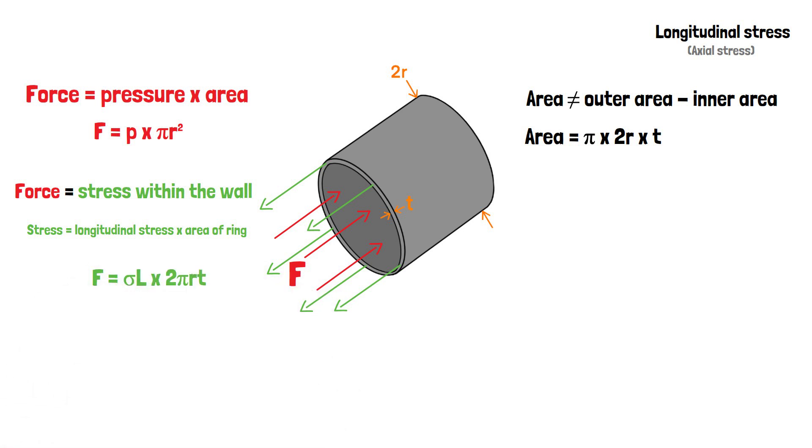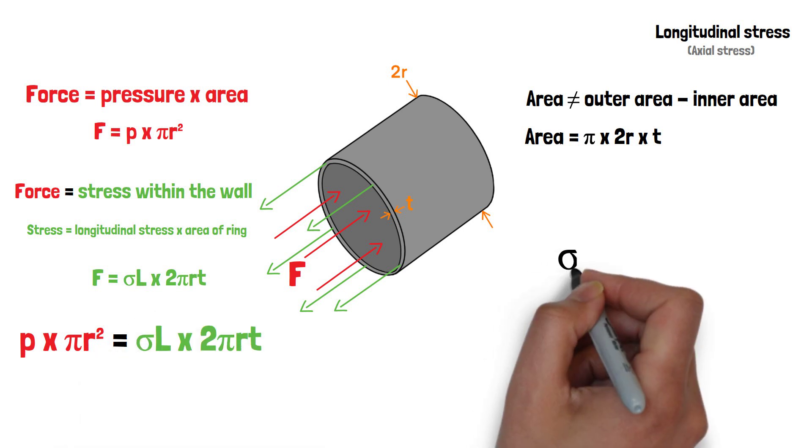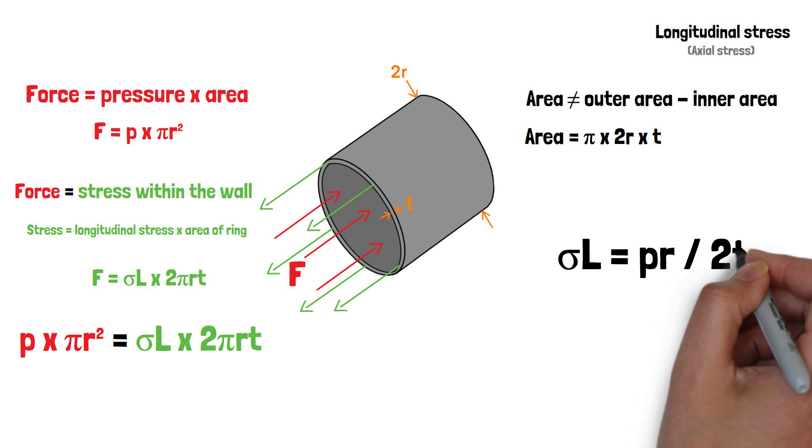By combining our two equations, we have P times pi R squared equals sigma L times 2 pi RT. We can transpose this to find the longitudinal stress, which becomes sigma L equals PR over 2T.